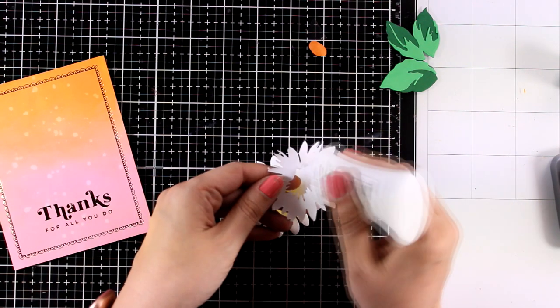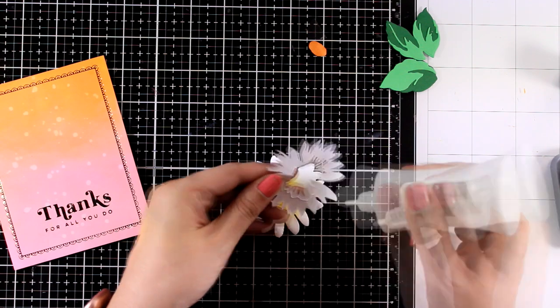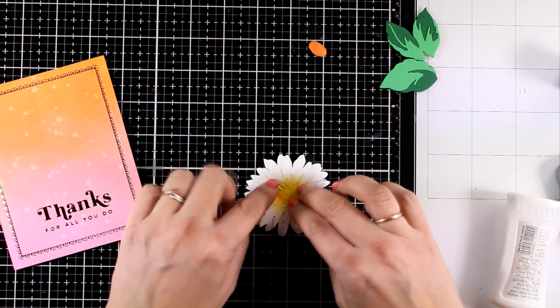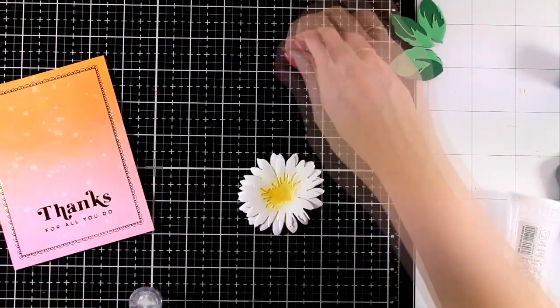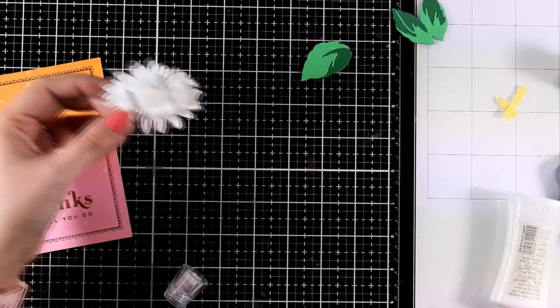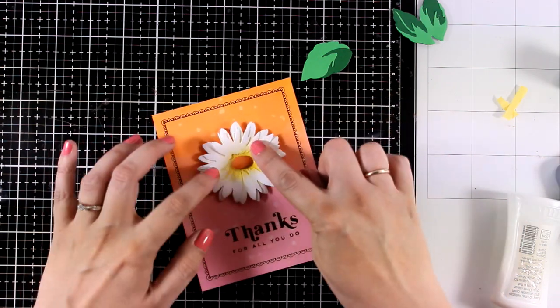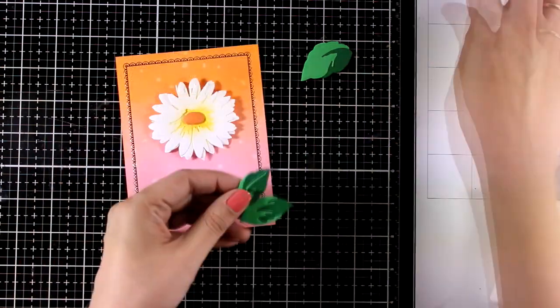By the way, this daisy is by Altenew and just like always you will find everything I use down below in the description area linked to multiple shops. I did stick the center of the flower with foam tape at the back since I have enough dimension and also I have foam tape at the back of my flower.